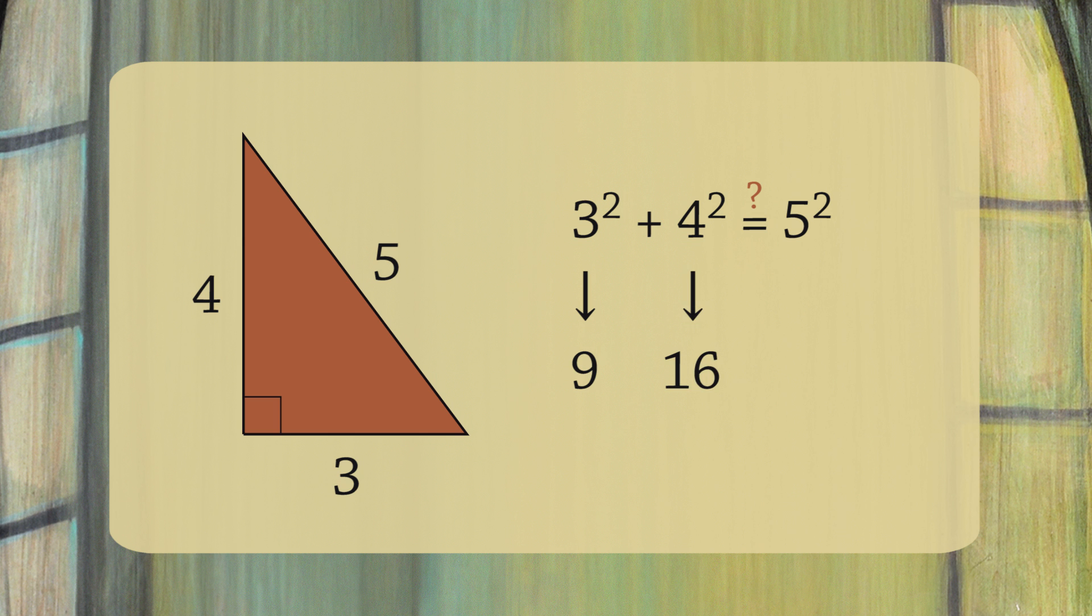4 squared equals 16, and 5 squared equals 25. And 9 plus 16 does equal 25. It works!